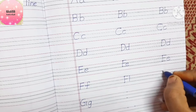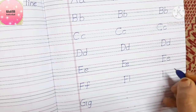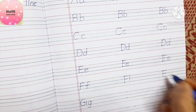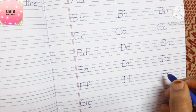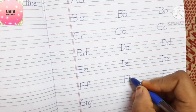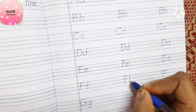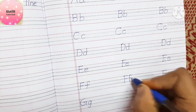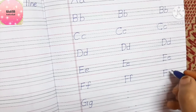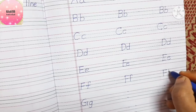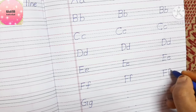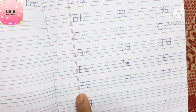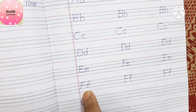For small f: write a standing line from first to third line, then a small downward curve, and a sleeping line. Words starting with F: fish, fan, frog.